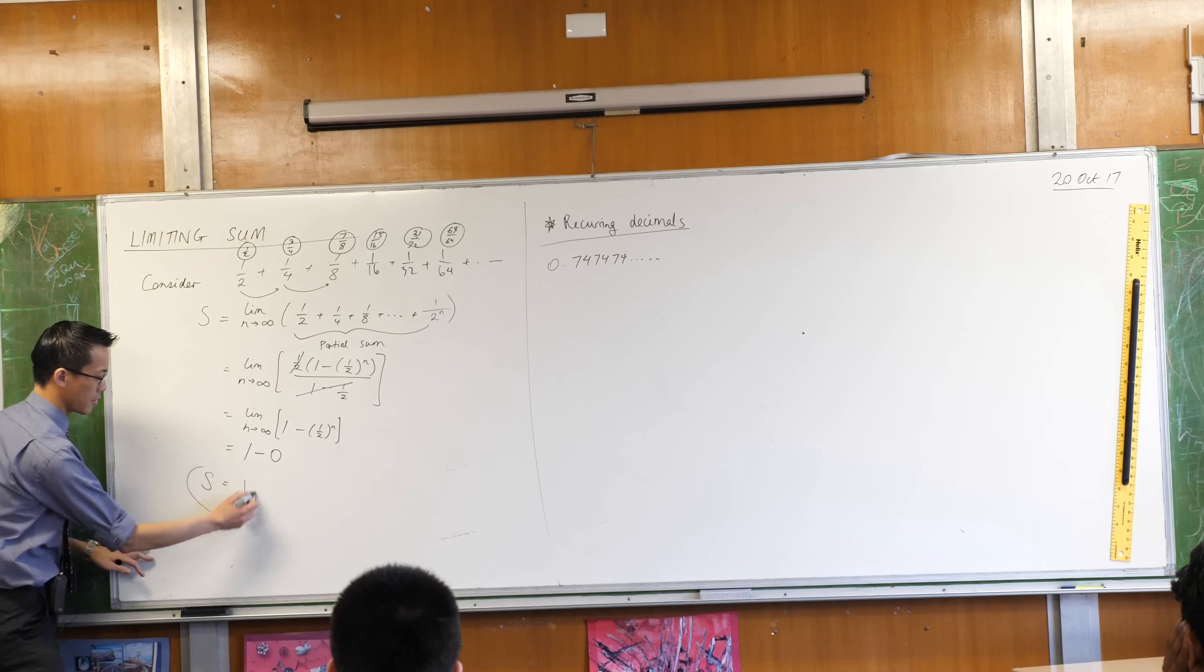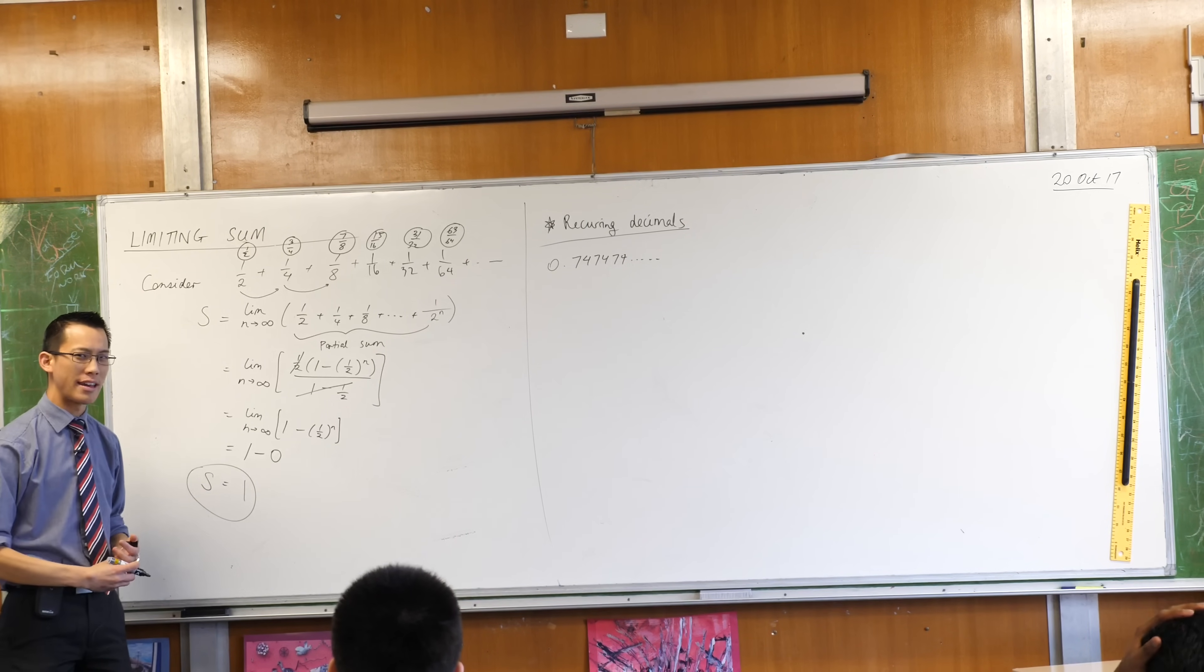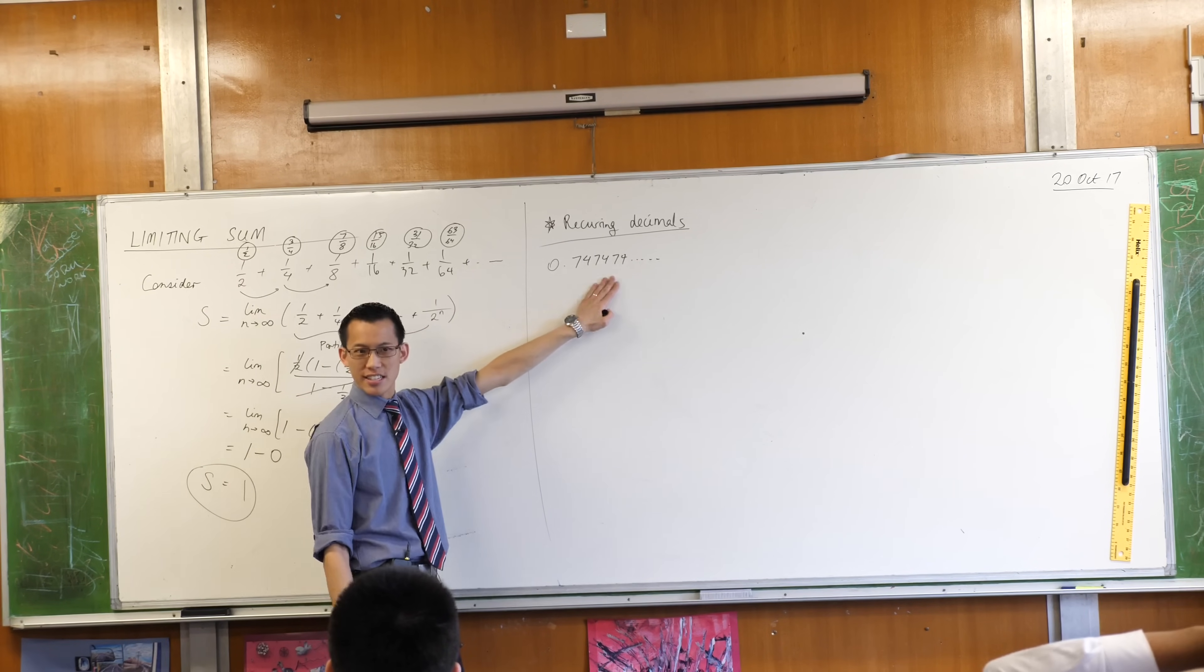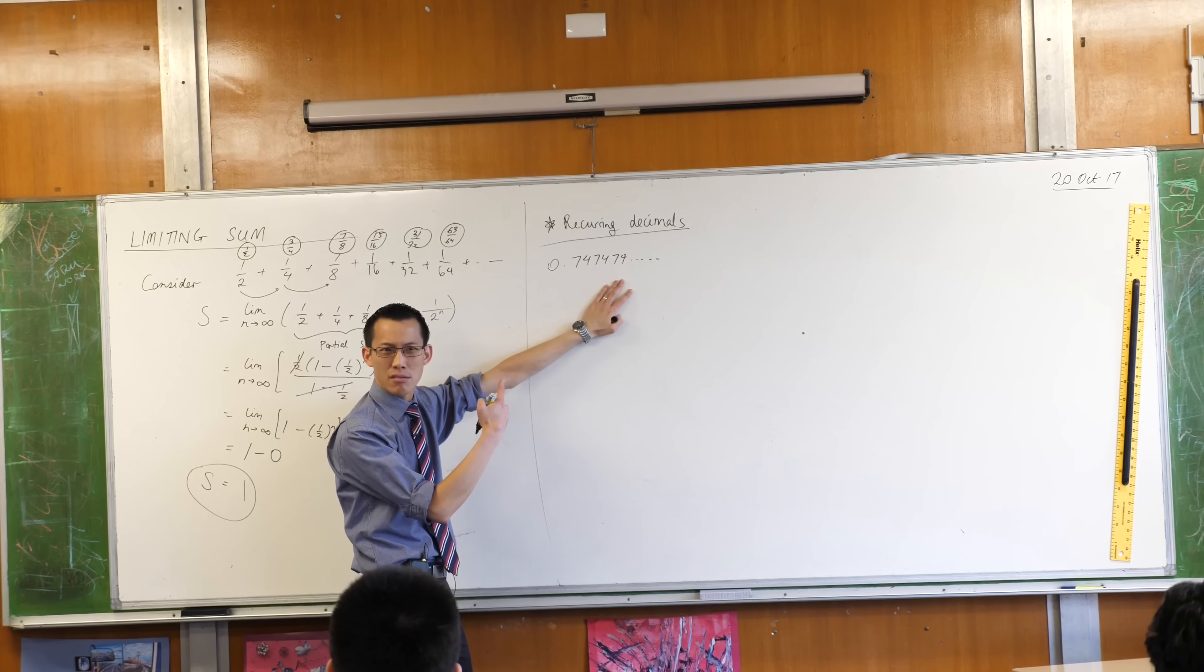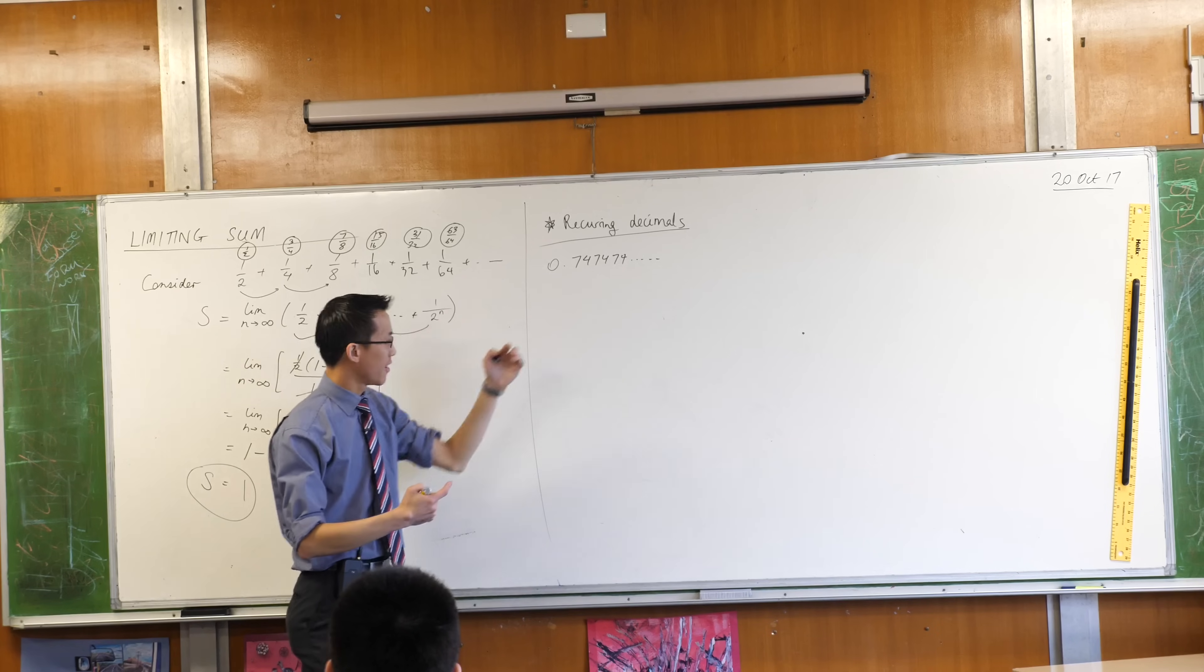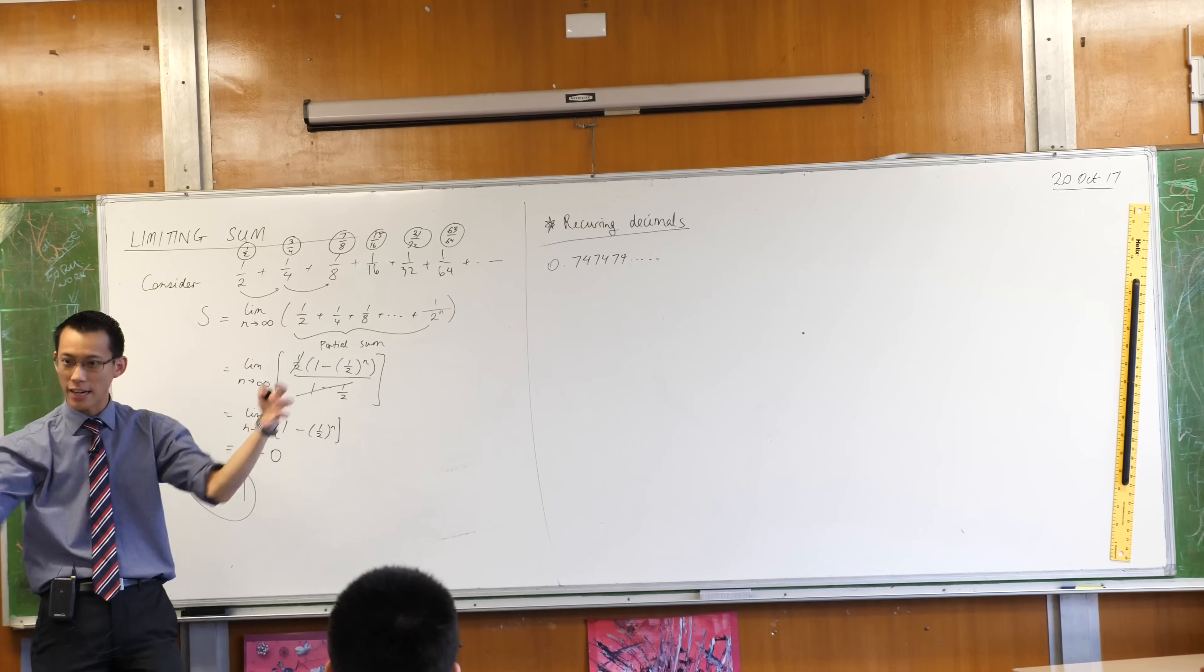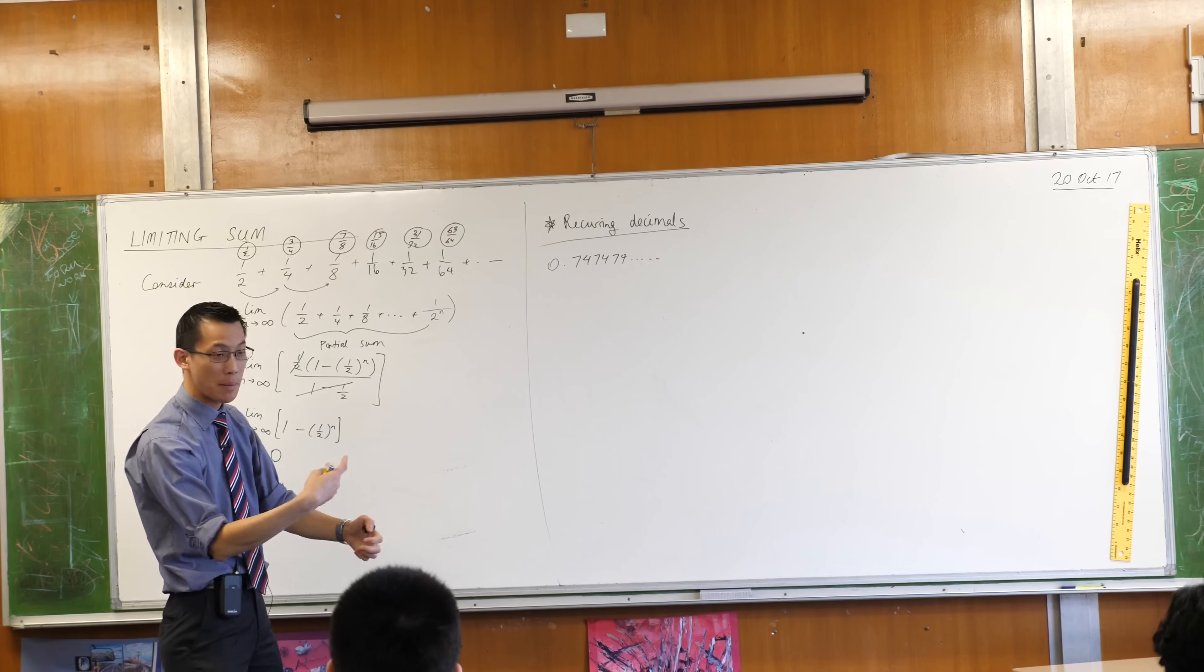Limiting sums, they only apply to GPs. I'll let you have a think about why they don't apply to APs. They only apply to GPs, which means I'm suggesting that this is a GP. That's a GP? It doesn't look like a GP. It doesn't look like one because everything's been added up. It's like a whole bunch of terms and they've all been collapsed. So what I want you to do is help me tease it back out and show me where the pieces come from.